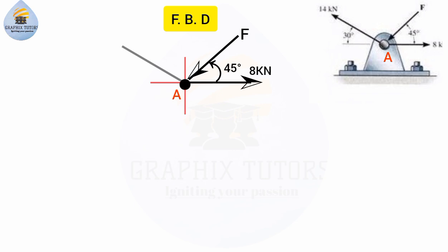The 14 kilonewtons is acting at an angle of 30 degrees to the horizontal, just as shown in the diagram. I'm going to call the red lines my y and x axis — I'll refer to them as North, South, East, and West. Pay attention to that.